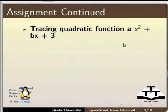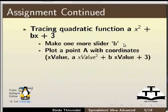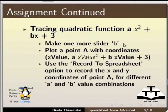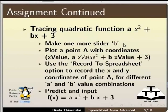To continue with the assignment, we will be tracing a quadratic function ax² + bx + 3. Make another slider b, plot a point A with coordinates x_value for x and a * x_value² + b * x_value + 3 for y. Use the Record to Spreadsheet option to record the coordinates for different a and b value combinations, then predict and input the function f(x) = ax² + bx + 3.